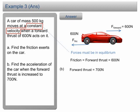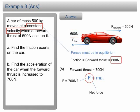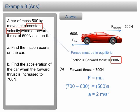For B, the forward thrust is increased to 700N and we are asked to find the acceleration. From Newton's second law, the acceleration can be determined using the equation F equals MA. Most students make a mistake at this step — they take 700N as the force F. Keep in mind that F is the net force acting on the object. Net force is the sum of all forces. The forward thrust is 700N, and there is a 600N friction acting backward. Therefore, the net force is 700N minus 600N. The mass is 500kg. Solving the equation, A is equal to 0.2 m/s².